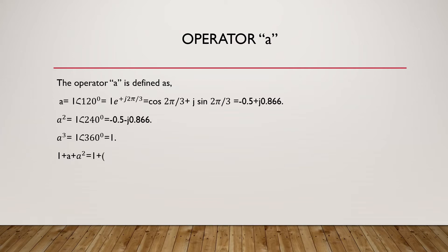The relation 1 + A + A² is very helpful in our derivation. Substituting A = −0.5 + j·0.866 and A² = −0.5 − j·0.866, the calculation gives zero. So whenever you see 1 + A + A², simply substitute it with 0. This is an important relation to remember throughout the study of power systems.